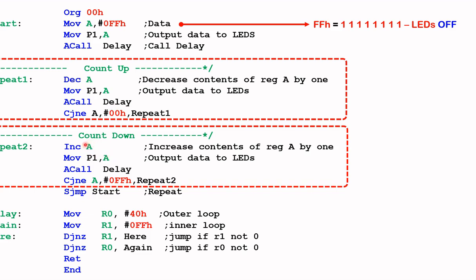Once we reach 00 hex, we drop down to the next section, which starts incrementing the contents of A. As it increases, output to P1, hold it, look for FF hex — if it's not FF hex, repeat. Once done, it jumps back to start and repeats that process all over again. Now let's take a look at the up-down counter in operation.